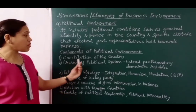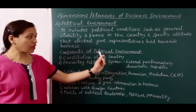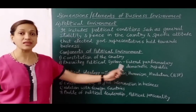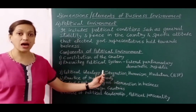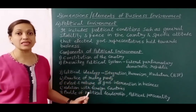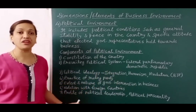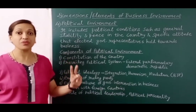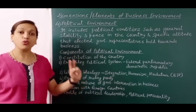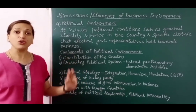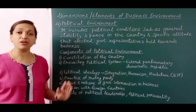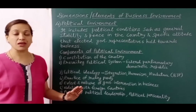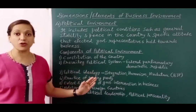The second component is the prevailing political system. India follows a federal parliamentary democratic republic system. According to this, the President of India is the head of state and the Prime Minister of India is the head of government. India follows a double government system — state government and central government. For example, in Uttar Pradesh, after Mr. Yogi Adityanath became Chief Minister, crime was controlled. During the Corona pandemic, many powers also rest with the state government.